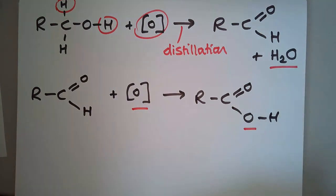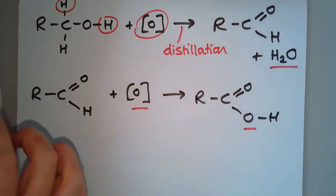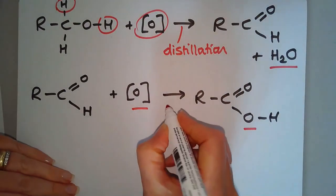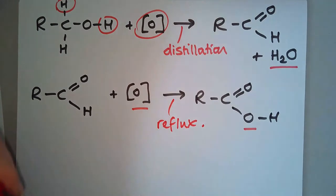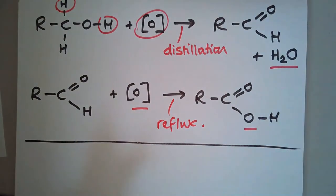If the exam question was to ask you to give an equation for the complete oxidation of a primary alcohol, you'd take it up to the carboxylic acid, and the conditions that you would use there are reflux. But for the balanced equation, you'd really need to add these two steps together.